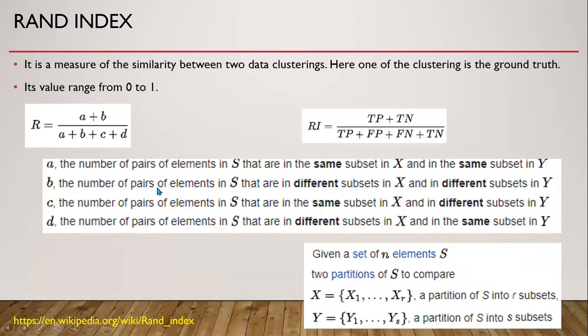Now we come to metrics where we have availability of ground truth. If we have two clusterings X and Y — that is, two partitions of our dataset — in the first partition we have clusters X1 to Xr, and in the second we have clusters Y1 to Ys. We have four situations: A is the number of pairs of elements in the same cluster in both X and Y, and B is the number of pairs in different clusters in both X and Y. The Rand index is A plus B divided by all situations. In terms of true positives and true negatives, its value ranges from 0 to 1.